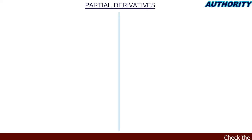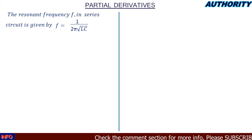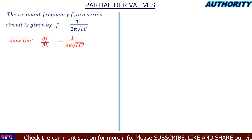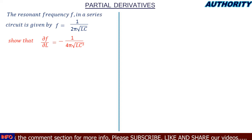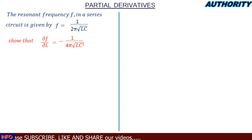Today let's take a look at this question under partial derivatives. The resonant frequency f in a series circuit is given by f = 1 / (2π√(LC)). The problem asks us to show that the partial derivative of f with respect to L is equal to −1 / (4π√(CL³)).